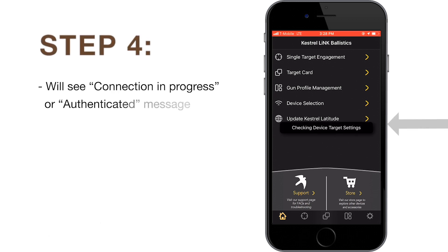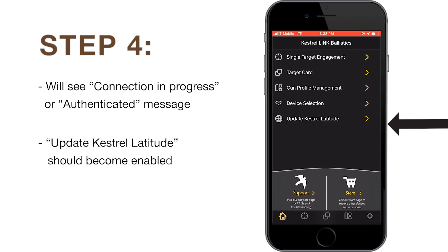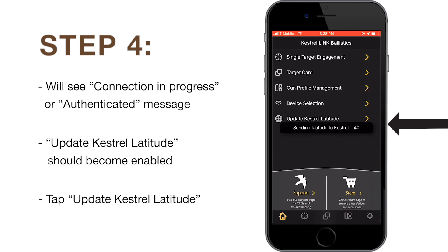You should see a 'Connection in Progress' message or an 'Authenticated' message appear. The 'Update Kestrel Latitude' option should also become enabled. This is telling you that the Kestrel is now connected to the Kestrel Link Ballistics app. Tap 'Update Kestrel Latitude' and you'll see that latitude is being sent to your Kestrel.